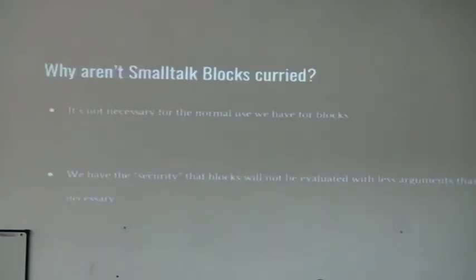So the real difference is that anonymous functions allow us to have partial application, which means we can have a function that is defined to receive more than one parameter and if we pass it less than the supposed amounts that they should receive, we receive a function partially applied. Blocks in Smalltalk don't have this characteristic. So why don't they have it? Well, they're not really necessary for the normal use that we give to them.